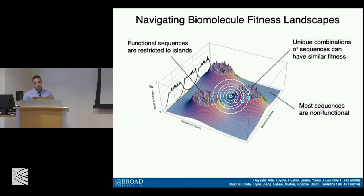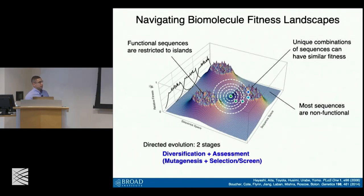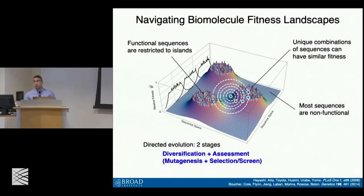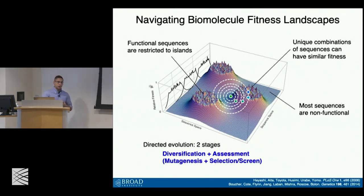We can boil down this relatively complex idea into two very important stages — the crux of any directed evolution method. The first is how do you diversify a given biomolecule? That is, how do you introduce mutations to allow you to best survey the possible sequence space within the vicinity of your starting point? The second is how do you assess the phenotypic consequences of those mutations — how do you select for members from that population that have improved activity? This is typically called either a selection or a screen.